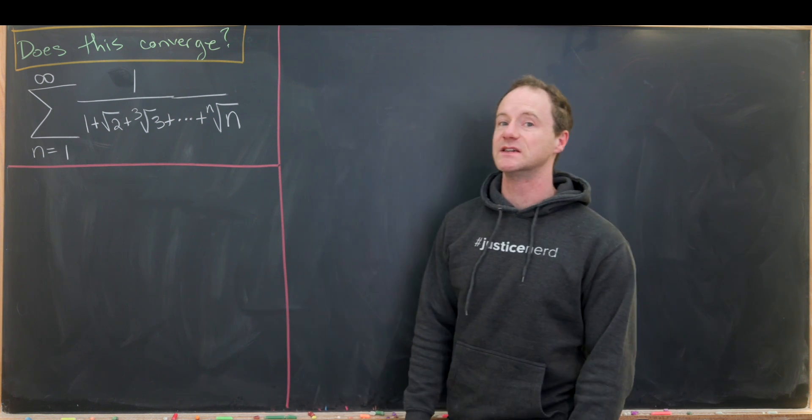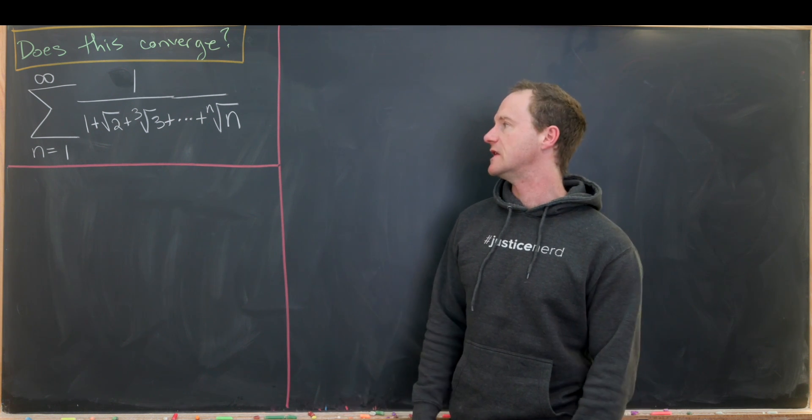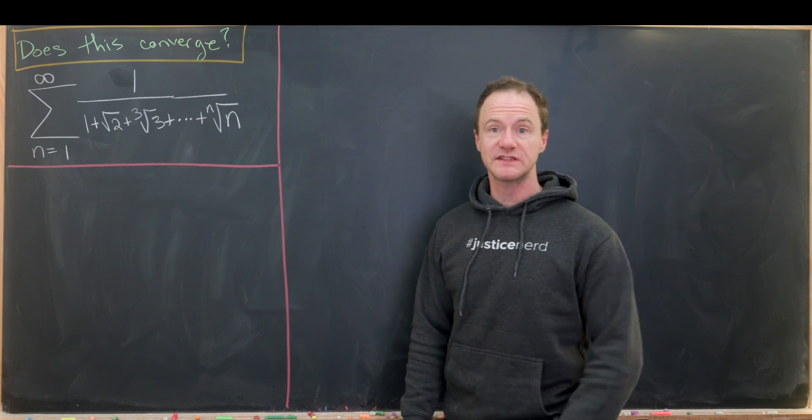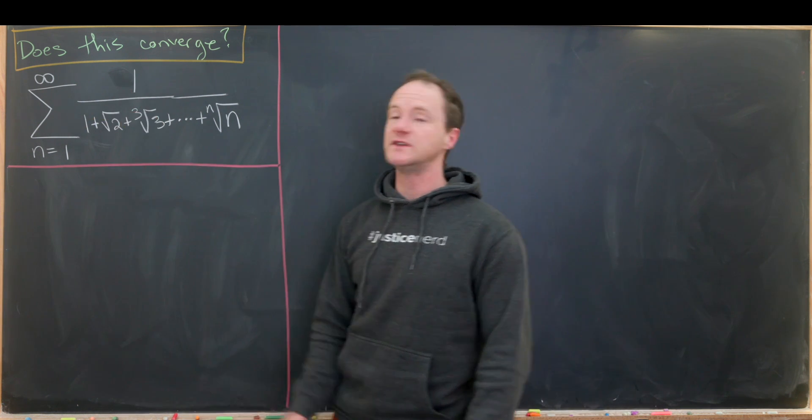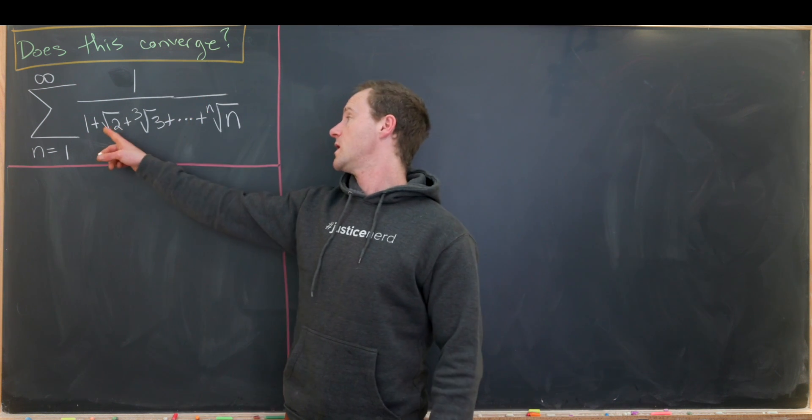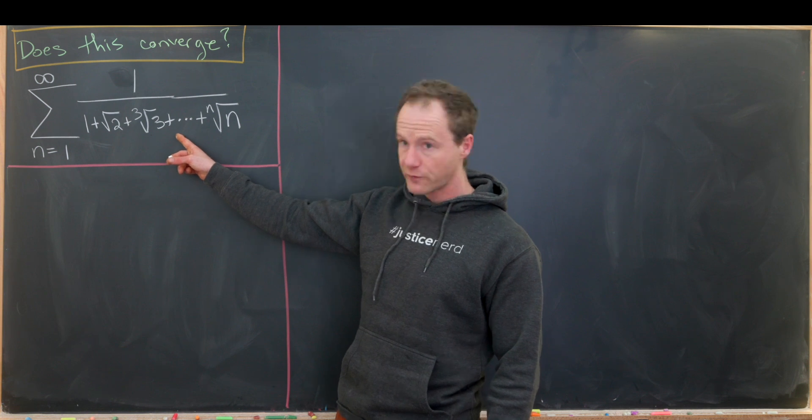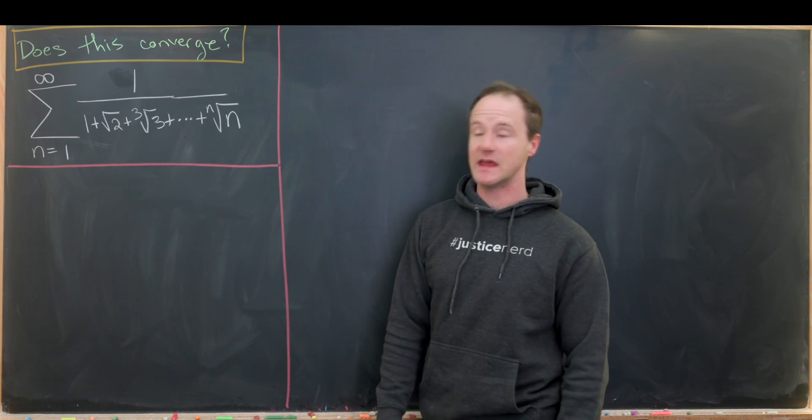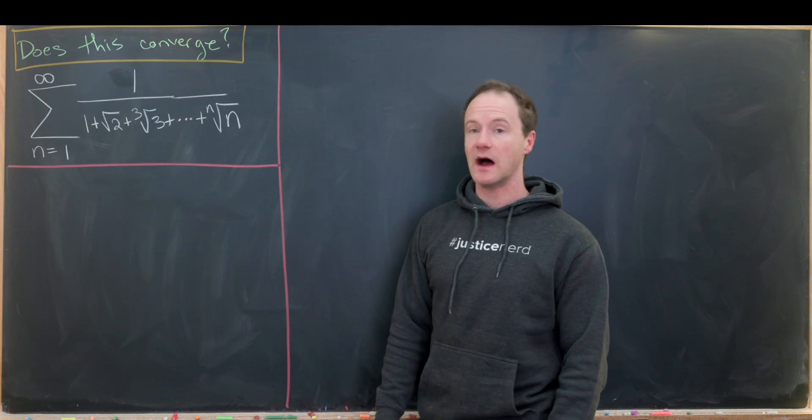Today we're going to analyze the convergence or divergence of a pretty interesting looking infinite series. Let's see what we got. We want to look at the sum as n goes from 1 to infinity of 1 over 1 plus the square root of 2 plus the third root of 3 plus the fourth root of 4 all the way up to the nth root of n. So we've got this nice little partial sum in the denominator.